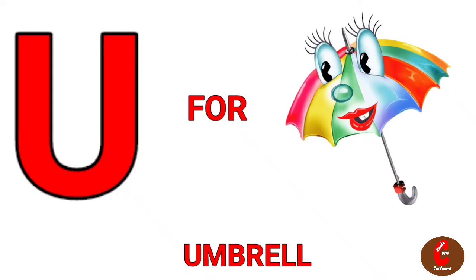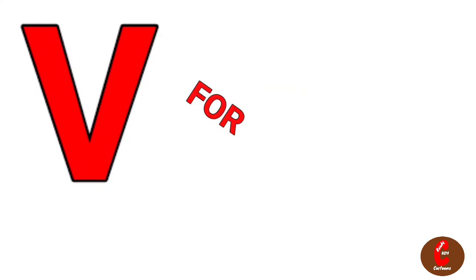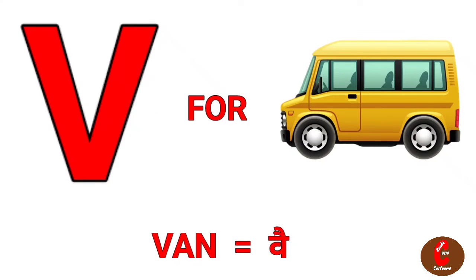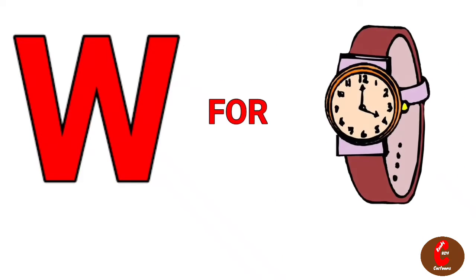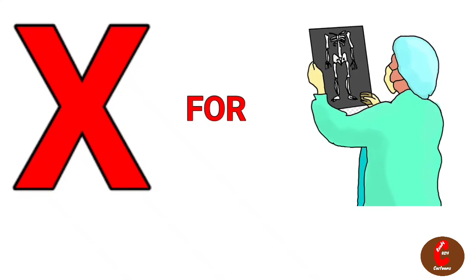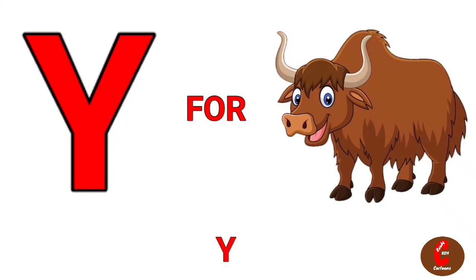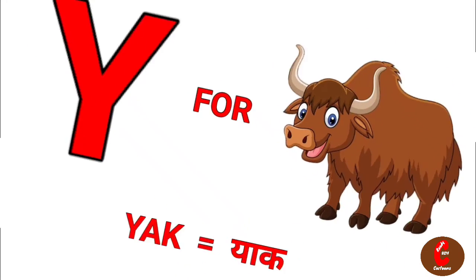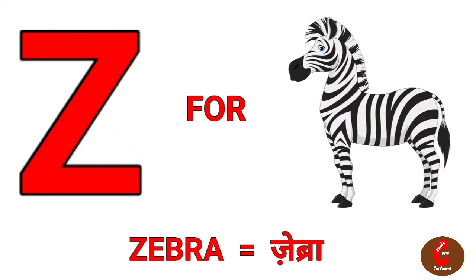U for Umbrella. V for Van. W for Watch. X for X-Ray. Y for Yellow. Z for Zebra.